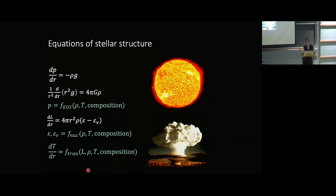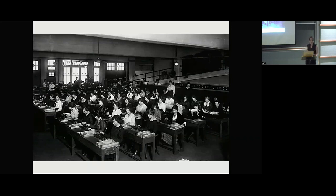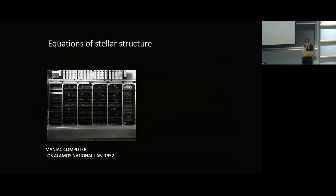These were rows and rows of almost exclusively female computers, each given a single step of an algorithm to perform on the hand calculator. And they would then pass on the results to the person next to them who would do the next step in the algorithm until you got the answer at the end of the road. Then the beginning of the 50s was the dawn of the computer age, and at that point it became much easier to solve these equations quickly. And one of them was the MANIAC computer at Los Alamos National Lab.